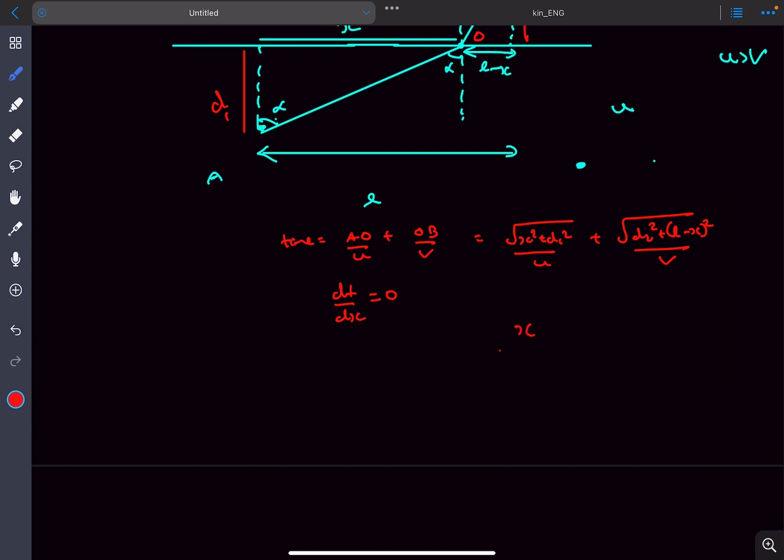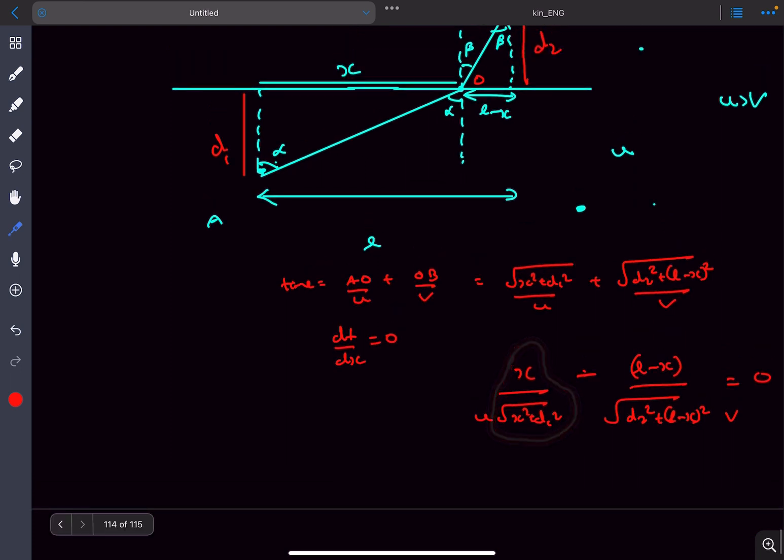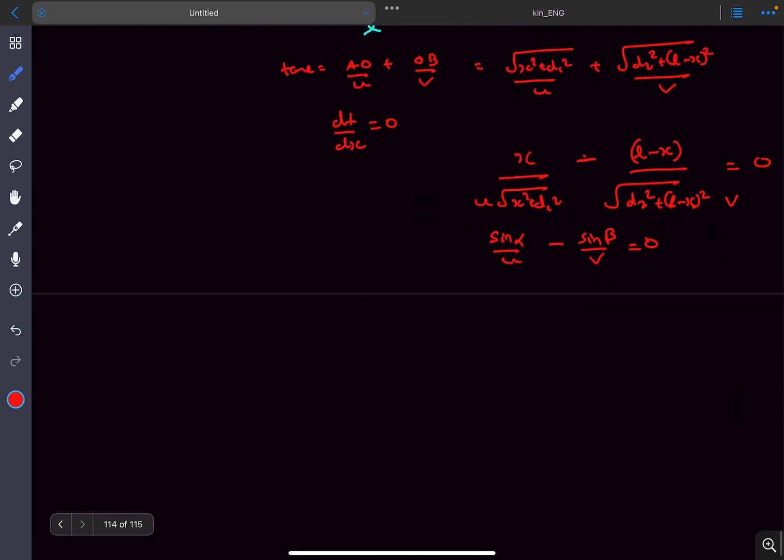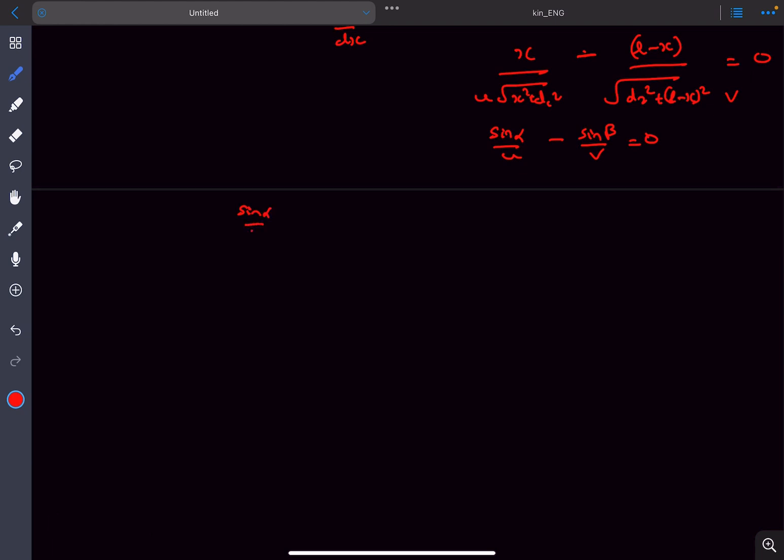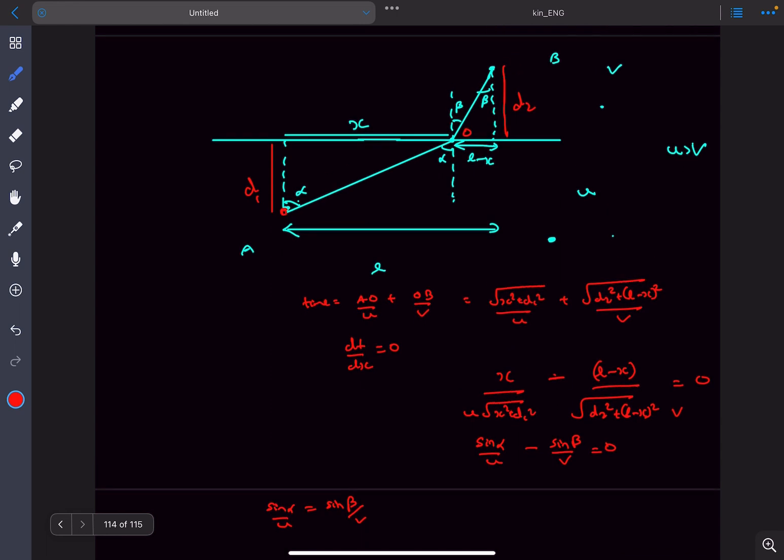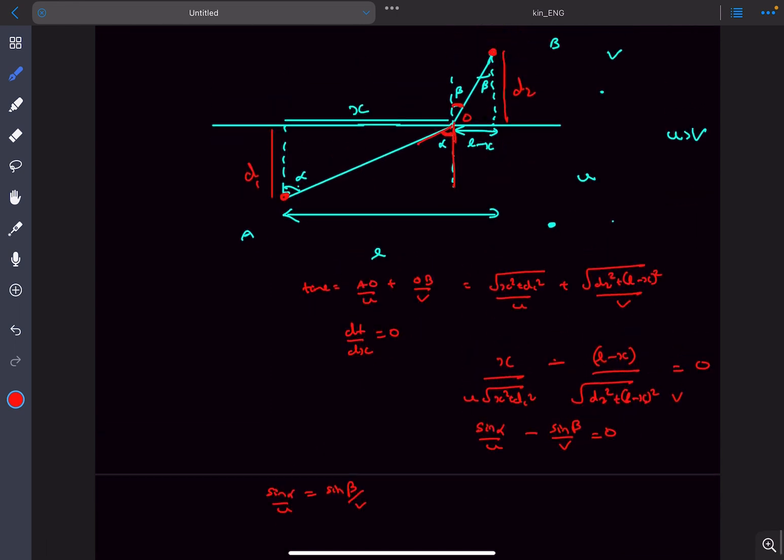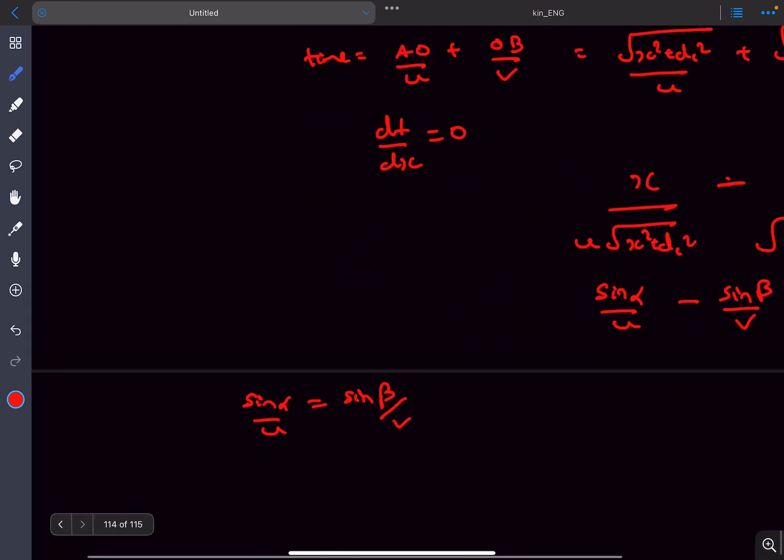After differentiation, we get X upon U times square root of X squared plus D1 squared equals (L minus X) divided by square root of D2 squared plus (L minus X) squared times V. The term X upon square root of X squared plus D1 squared is simply sin alpha, and the other term is sin beta. This gives us sin alpha upon U equals sin beta upon V. This is a very important result for minimizing time.